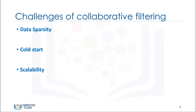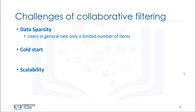Collaborative filtering is a very effective recommendation system. However, there are some challenges with it as well. One of them is data sparsity. Data sparsity happens when you have a large dataset of users who generally rate only a limited number of items. Collaborative-based recommenders can only predict scoring of an item if there are other users who have rated it. Due to sparsity, we might not have enough ratings in the user-item dataset, which makes it impossible to provide proper recommendations.